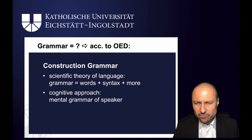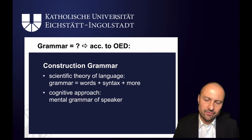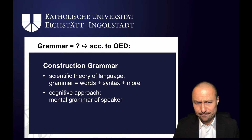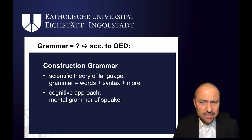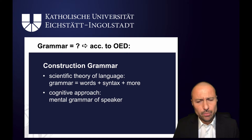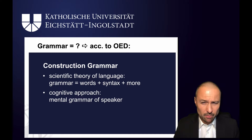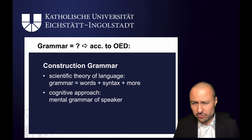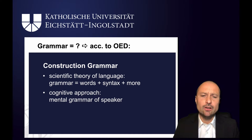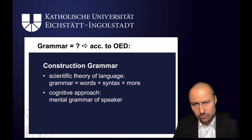Construction grammar is a scientific theory of language, so it falls under the third definition. For construction grammar, grammar means words, syntax, plus as we will see a lot more. In addition to that, construction grammar adopts a cognitive approach — we aim to look at the mental grammar of speakers, of an individual.